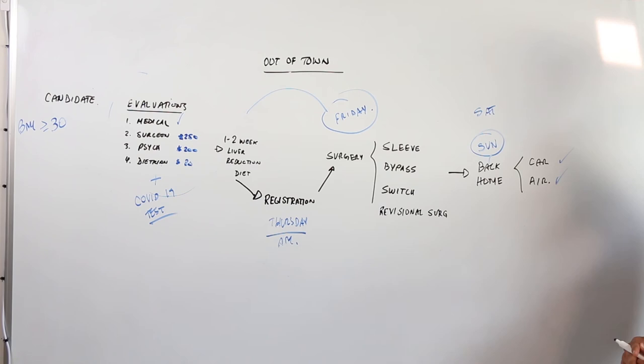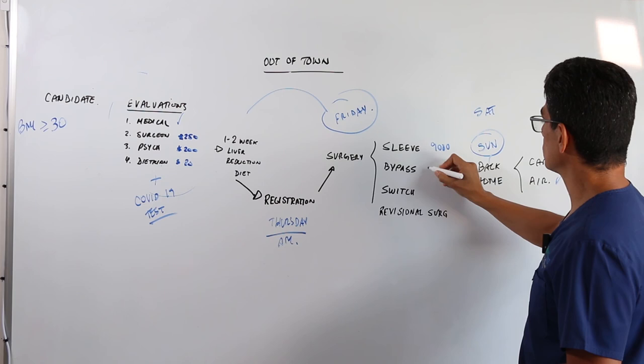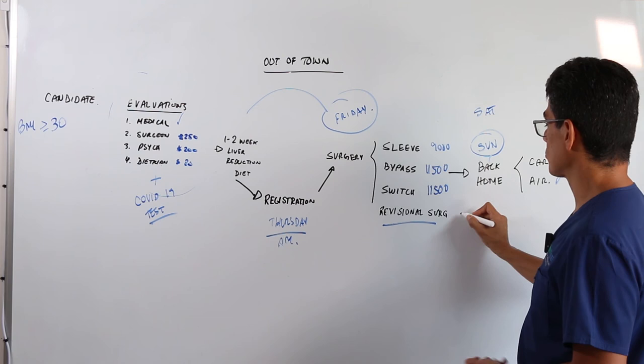And the follow-up appointment will be the next week on the phone. What are the prices? So our cash price for the sleeve gastrectomy is $9,000. The bypass is $11,500. Same as the switch. And revisional surgery, it depends what you need, because some people need a band removal, a sleeve, and every case is different. So we'll discuss that on a one-to-one basis.